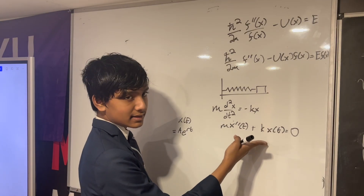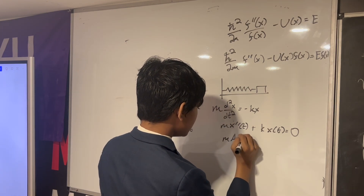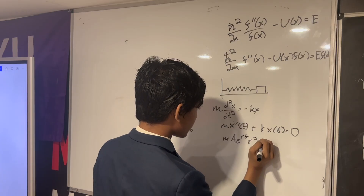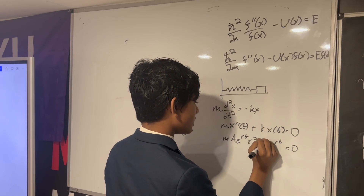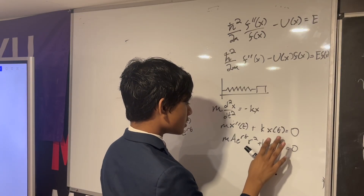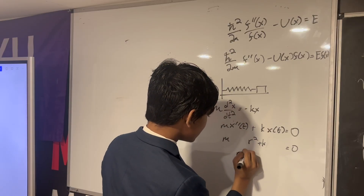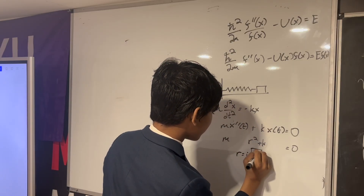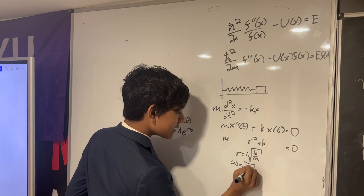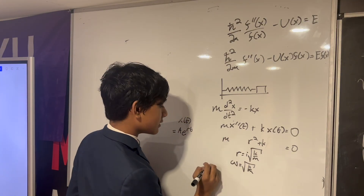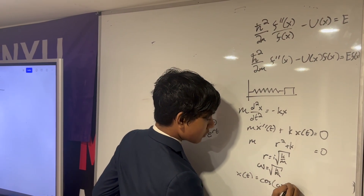We plug that in and get m times r squared times e to the rt, plus k times e to the rt, equals zero. The e to the rt part cancels out, and we eventually get r equals i times the square root of k over m. This is the frequency omega, and that implies the solution to this equation is x of t equals cosine of omega t.